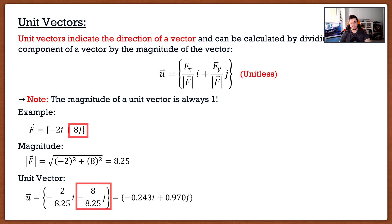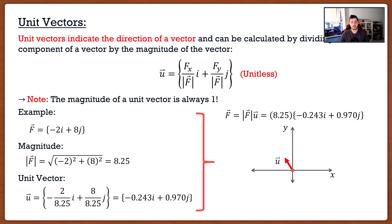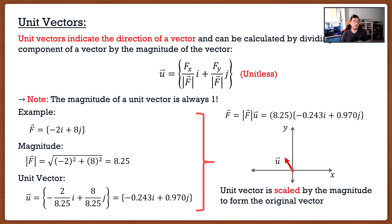We can write the vector as 8.25 × (−0.243i + 0.970j) — magnitude times unit vector. Visualizing this: the unit vector points in the direction of F on the x-y grid, and multiplying it by the scalar 8.25 simply stretches it to the correct length, giving us the actual force vector.